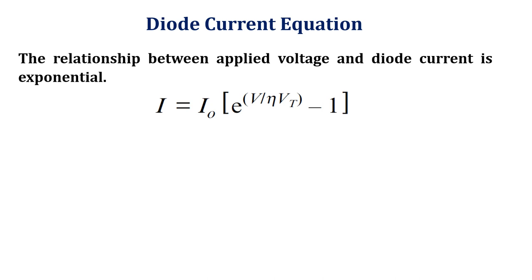The relationship between applied voltage and diode current is exponential. It is mathematically expressed as I equals I₀ into e to the power of V divided by η into Vt minus 1.